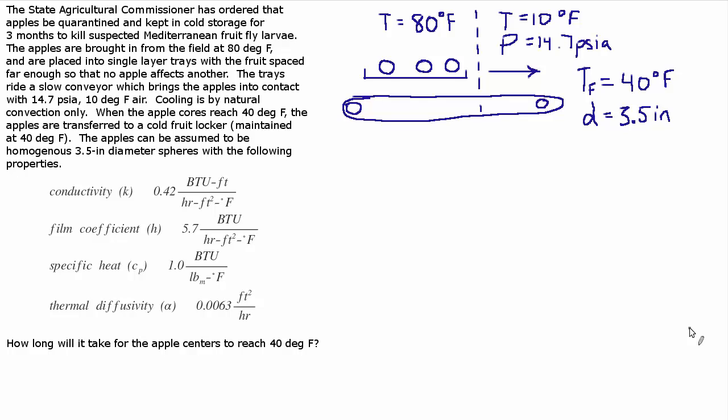The apples can be assumed to be homogenous three and a half inch diameter spheres with the following properties: conductivity, film coefficient, specific heat, and thermal diffusivity. How long will it take for the apple centers to reach 40 degrees Fahrenheit?